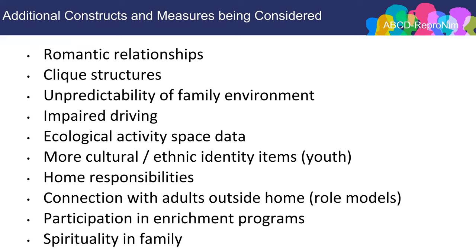There are many other constructs that have been debated for inclusion in the culture and environment protocol. Some have been taken up by other workgroups. The challenge is that bringing something new into the protocol means something has to come out, balanced against the guiding principle of consistency. Topics under consideration include romantic relationships, clique structures, unpredictability of the family environment, impaired driving, ecological activities, more cultural and ethnic identity items from youth, home responsibilities, connections with adult role models, participation in enrichment programs, and spirituality in the family. Additionally, COVID-related items were added given the unusual shared experience across all ABCD sites.